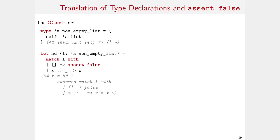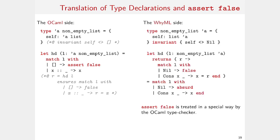Imagine we want to declare a type of lists that are always non-empty. We create a new record type, call it non-empty list, and attach a type invariant stating that the self field always stores a non-empty list. We can then build a 'head' function where the first branch of the pattern matching always asserts to false. Luckily, on the WhyML side, we have the 'absurd' construction, which has the exact same semantics as the 'assert false' construction, already treated in a special way by the OCaml type checker. Type invariants are also readily supported by the WhyML language.